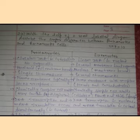In prokaryotes, there is a nucleoid which is not membrane-bound. In eukaryotes, there is a true nucleus which is membrane-bound. Prokaryotes have a single chromosome, while eukaryotes have several chromosomes.